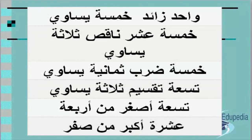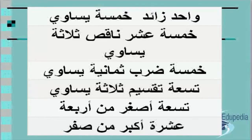Next one: تسعة تقسيم ثلاثة يساوي. الجواب ثلاثة — nine divided by three equals three. Now you have to say true or false: تسعة أصغر من أربعة — is it true or false? الجواب False, because nine is not less than four. The last sentence: عشرة أكبر من صفر — is it true or false? الجواب True, because ten is greater than zero.